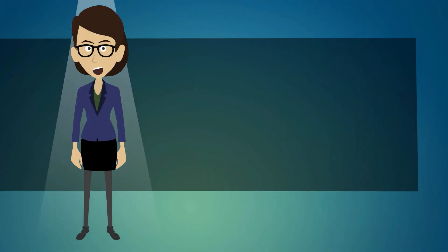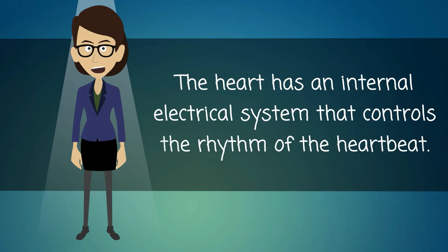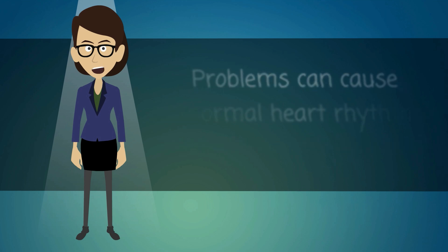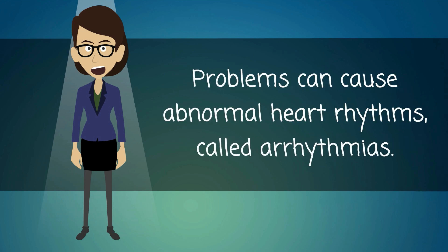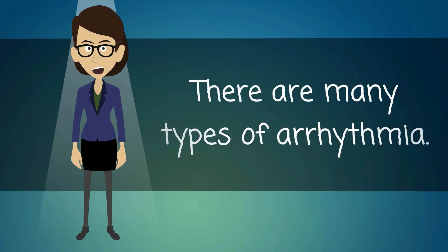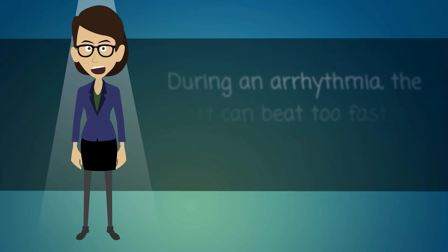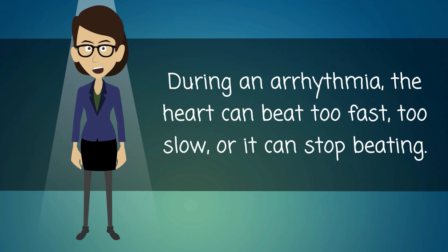The heart has an internal electrical system that controls the rhythm of the heartbeat. Problems can cause abnormal heart rhythms called arrhythmias. There are many types of arrhythmia. During an arrhythmia, the heart can be too fast, too slow, or it can stop beating.